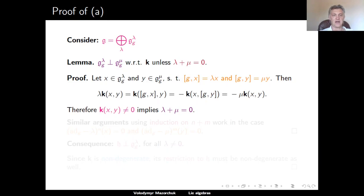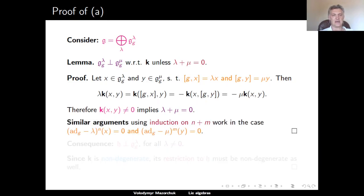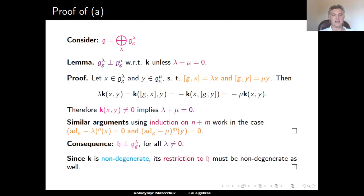This was the special case where X and Y were proper eigenvectors. For generalized eigenvectors, one can use similar arguments and induction on N plus M, where N is the power of ad G minus lambda which kills X, and M is the power of ad G minus mu which kills Y — a nice exercise to do. The consequence is that our Cartan subalgebra H, which coincides with G sub G upper zero, must be orthogonal to any G sub G upper lambda for lambda non-zero. Since the killing form of a semi-simple Lie algebra is non-degenerate, its restriction to H must be non-degenerate as well. This completes the proof of Part A.